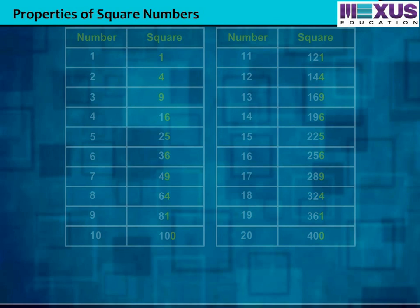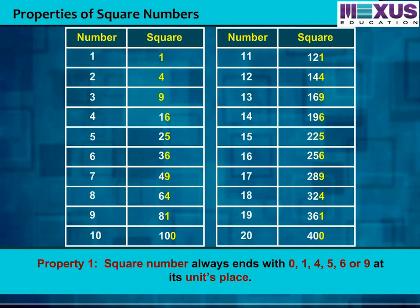Now let us understand the properties of square numbers. A square number always ends with 0, 1, 4, 5, 6, or 9 at its unit place. Look at the table showing the squares of numbers. You can see the ending digit of the square number is ending with 0, 1, 4, 5, 6, or 9 at its unit place. None of these ends with 2, 3, 7, or 8 at its unit place.